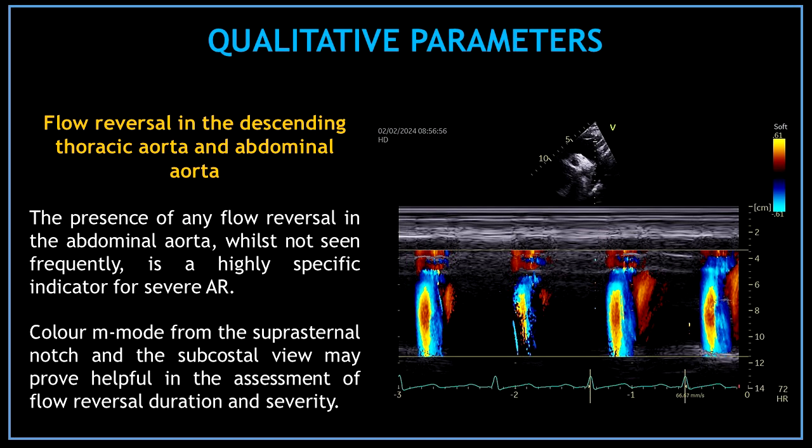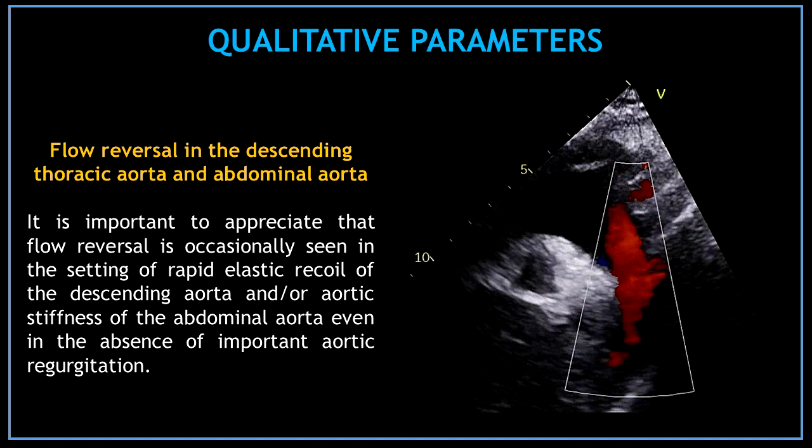Color M-mode from the suprasternal notch and the subcostal view may prove helpful in the assessment of flow reversal duration and severity. It is important to appreciate that flow reversal is occasionally seen in the setting of rapid elastic recoil of the descending aorta and/or aortic stiffness of the abdominal aorta, even in the absence of important aortic regurgitation.